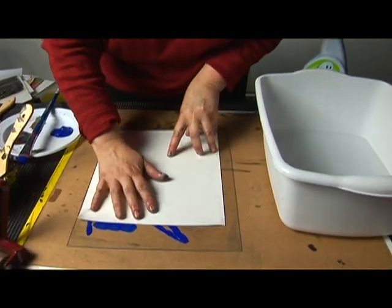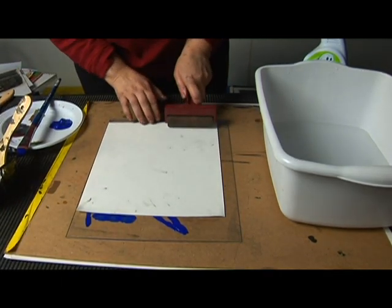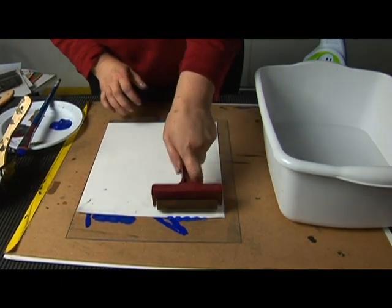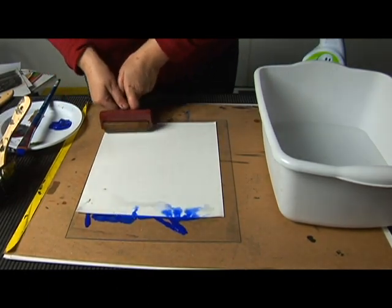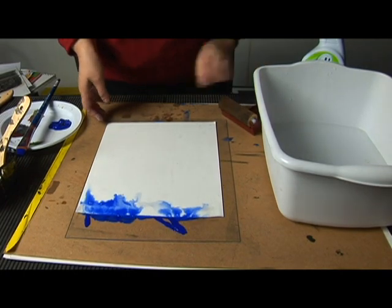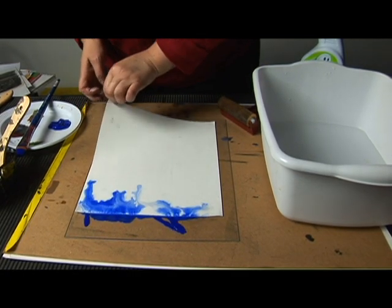You lay it carefully so you don't get air bubbles. Then you're going to roller it. You see some of it's going to come out the other side, and then you pull it up.